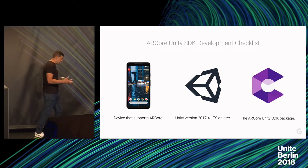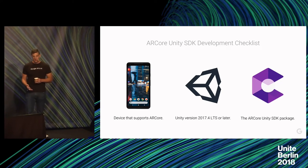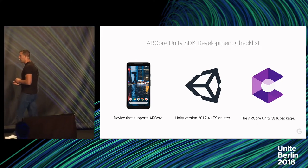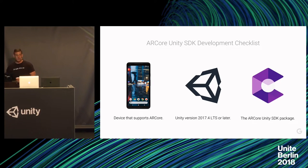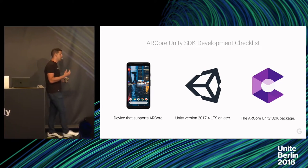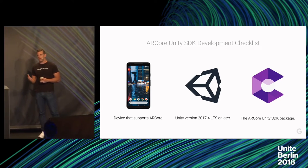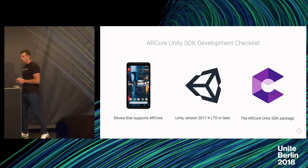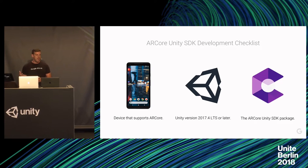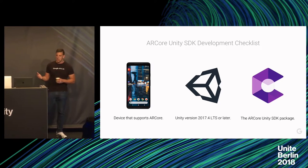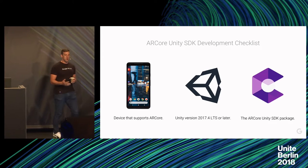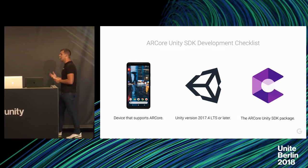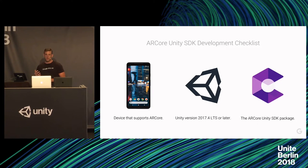Before we talk about those features, let's cover some prerequisites for developing ARCore in Unity. The first thing you need is a device that supports ARCore. The second thing you need is a Unity Editor version that supports ARCore — currently that's 2017.4 or later. And the last thing you need is our ARCore Unity SDK. The SDK is a normal Unity package you can download from our developer site at developers.google.com/ar and import into your project. If you're already developing for Android, it's as simple as dragging a prefab into your scene for the ARCore device to get motion tracking and background rendering working. We've tried to make this as simple for developers as possible and in line with Unity's best development practices.